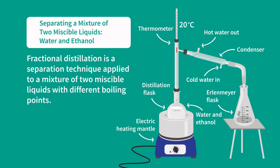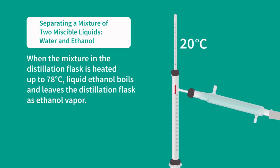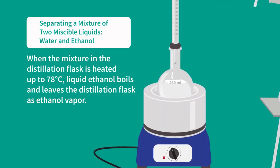Fractional distillation is a separation technique applied to a mixture of two miscible liquids with different boiling points. When the mixture in the distillation flask is heated up to 78 degrees Celsius, liquid ethanol boils and leaves the distillation flask as ethanol vapor.